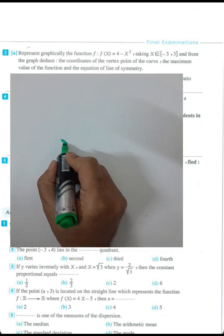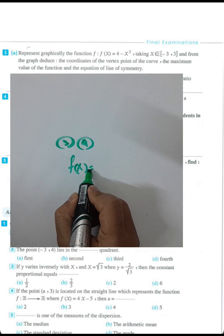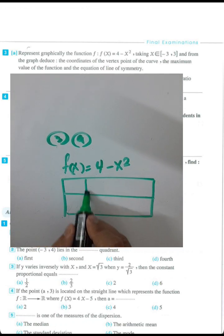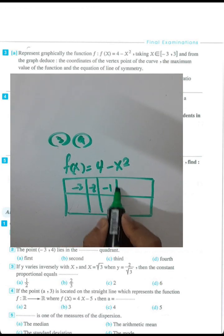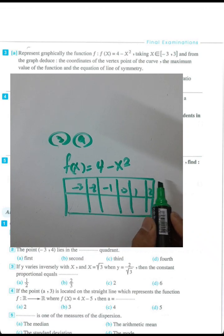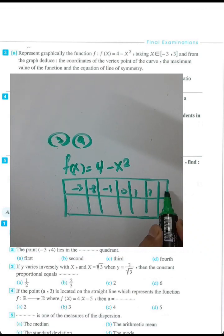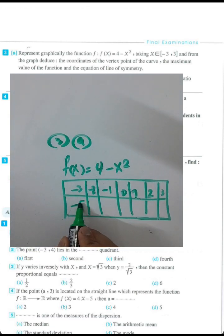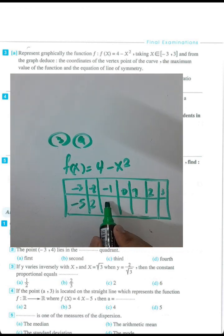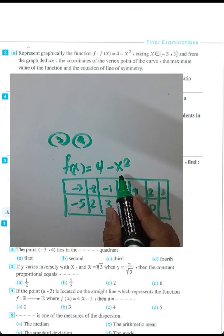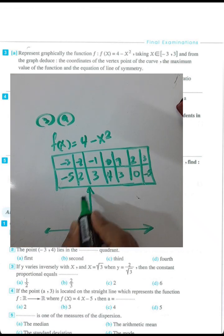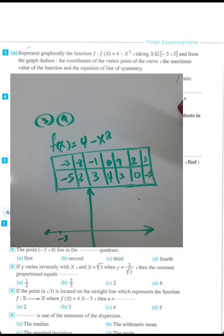Question 3, letter a: we have the function f(x) equals 4 minus x squared, for x in the interval from negative 3 to 3, with values negative 3, negative 2, negative 1, 0, 1, 2, 3. Computing: f(negative 3) = 4 minus 9 = negative 5; f(negative 2) = 4 minus 4 = 0; f(negative 1) = 4 minus 1 = 3; f(0) = 4; f(1) = 3; f(2) = 0; f(3) = 4 minus 9 = negative 5.